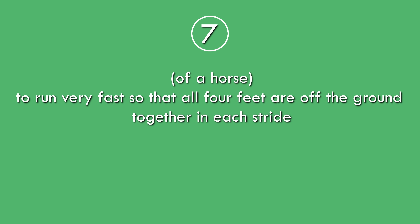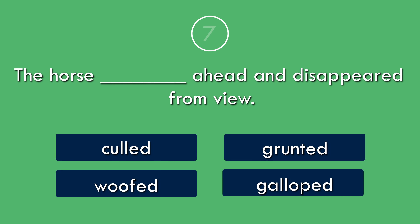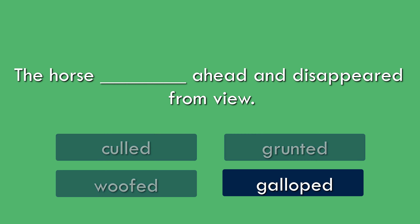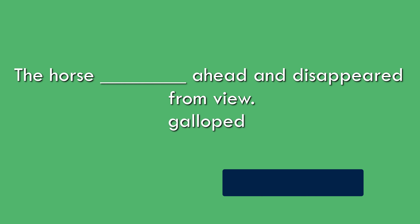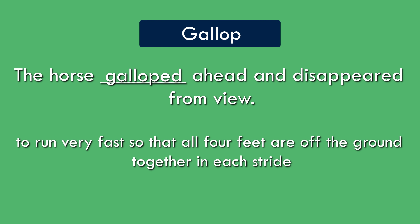Question 7. To run very fast, so that all four feet are off the ground together in each stride. The horse galloped ahead and disappeared from view. Gallop: to run very fast, so that all four feet are off the ground together in each stride.